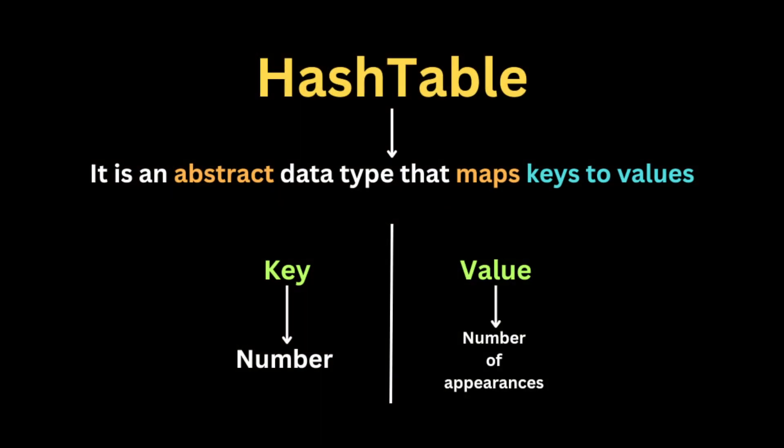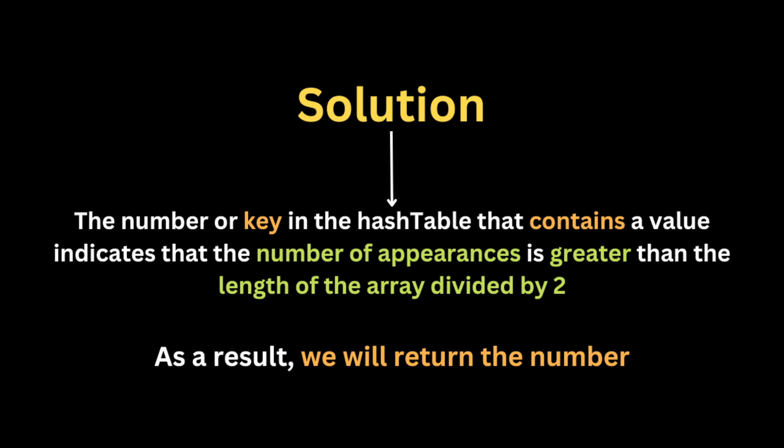To solve this problem we will use a hash table. We're going to store the number as a key and the value will be the number of appearances of that number in the array. Then we set a condition: once a key in the hash table has a value bigger than the length of the array divided by 2, we return that number as the result.